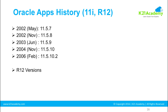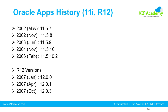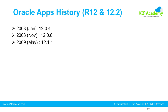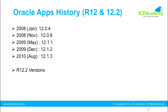Oracle eBusiness Suite release 12 started with 'R' for release. Version 12.0.0 was introduced in 2007, followed by 12.0.1, 12.0.3, 12.0.4, 12.0.5, and 12.0.6. Then came the 12.1 line: 12.1.2 and 12.1.3, which is the terminal release for R12.1. There may be patch sets like 12.1.3.patchset numbers, but 12.1.3 was the terminal release for R12.1.